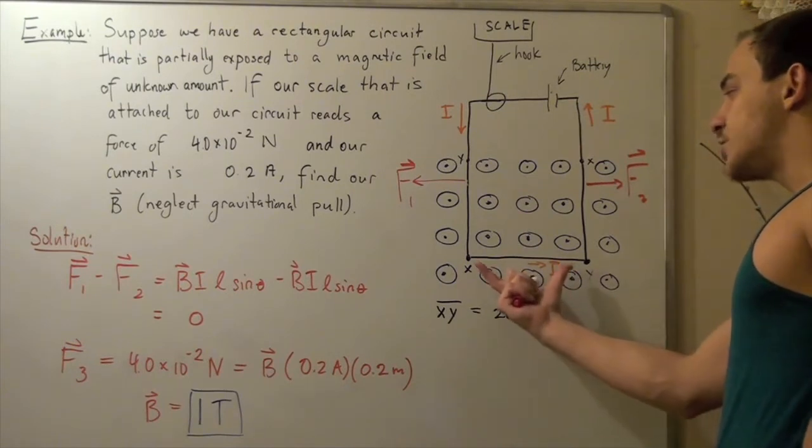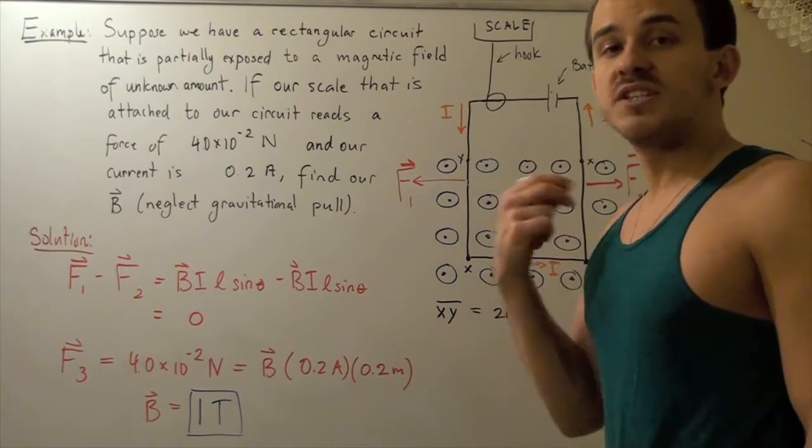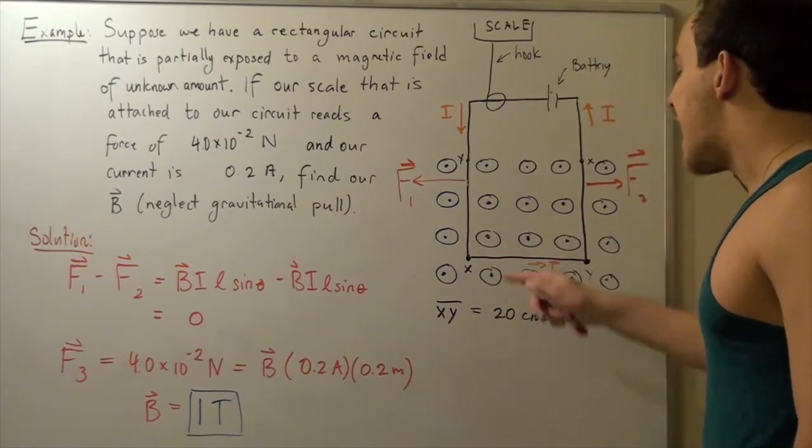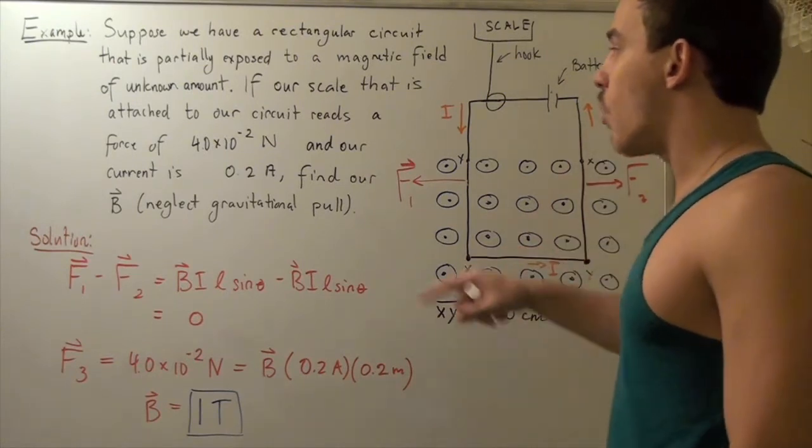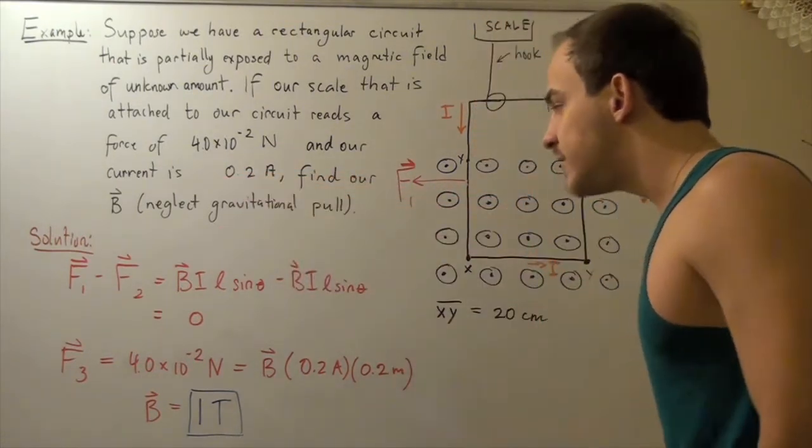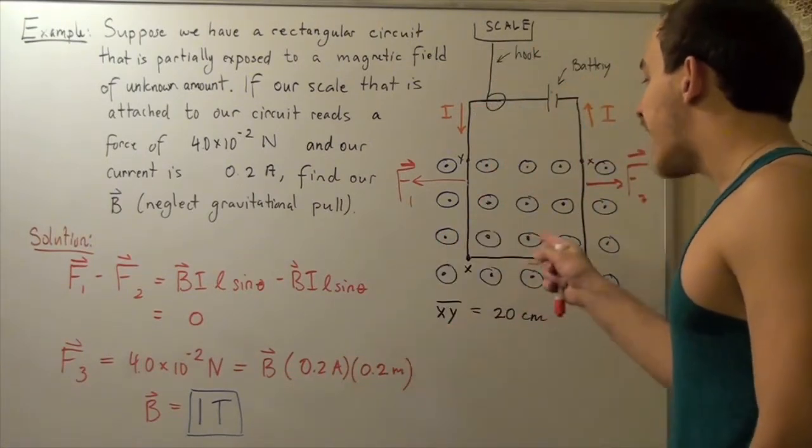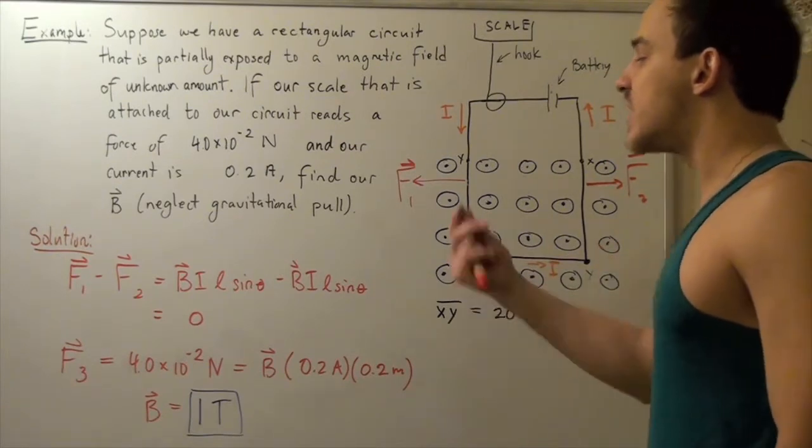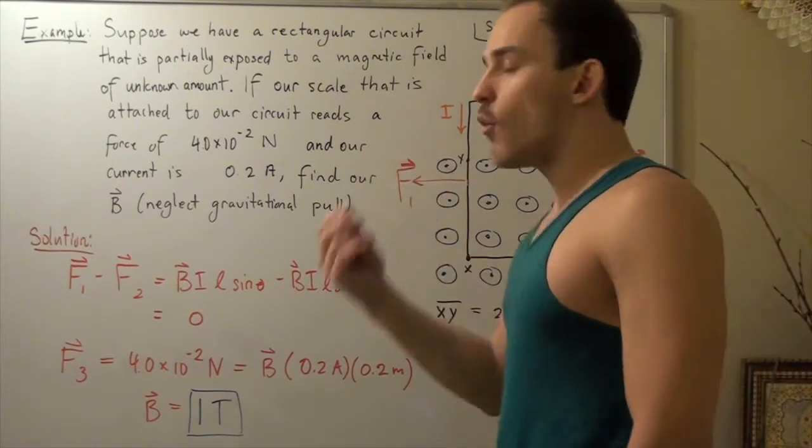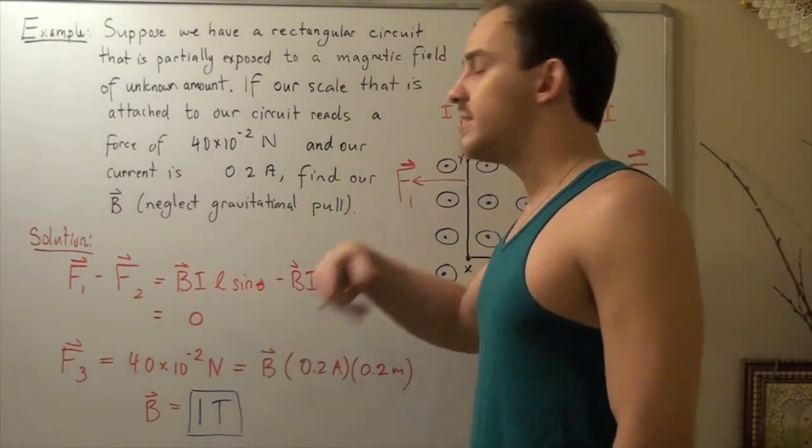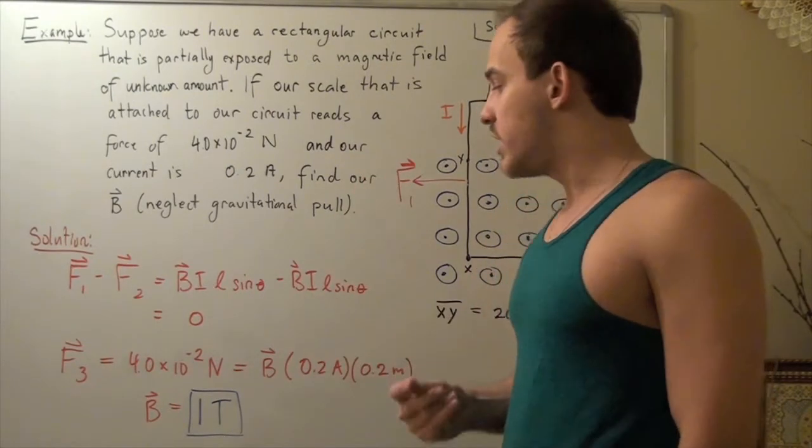Now, once again, this section has a length of 20 centimeters, and that means if we want to convert it to meters, we simply divide it by 100, we get 0.2 meters. Our current flowing through this section is the same as before. It's 0.2 amps. What we want to find is our magnetic field, and what we know is our force. Our angle is 90 degrees, so sine of 90 is 1. So, we use the following formula. Force equals BIL times sine theta. Sine theta is simply 1. Sine 90 is 1.